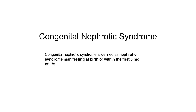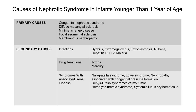Congenital nephrotic syndrome is defined as nephrotic syndrome manifesting at birth or within the first 3 months of life. Causes in infants younger than 1 year are classified into primary — including congenital nephrotic syndrome, diffuse mesangial sclerosis, minimal change disease, FSGS, and membranous nephropathy — and secondary causes, including infections, drug reactions, and syndromes associated with renal disease such as Nail-Patella syndrome, Lowe syndrome, and Denys-Drash syndrome.